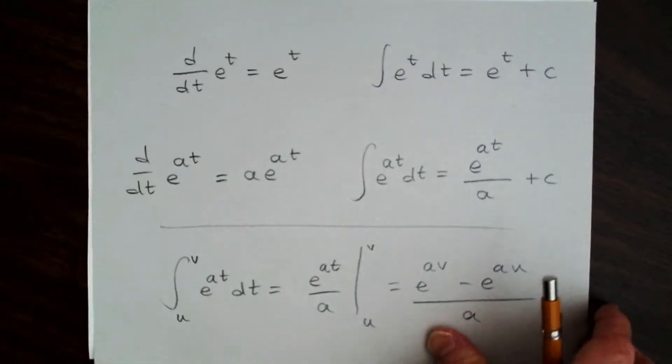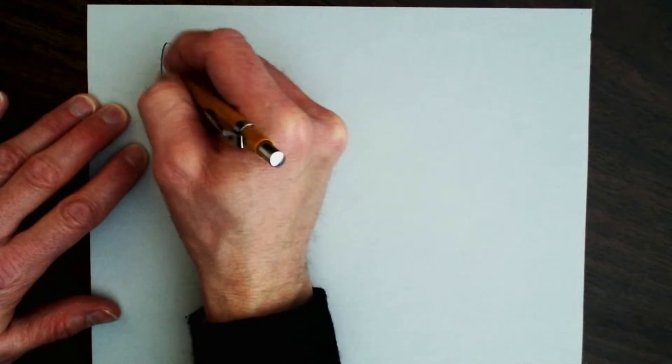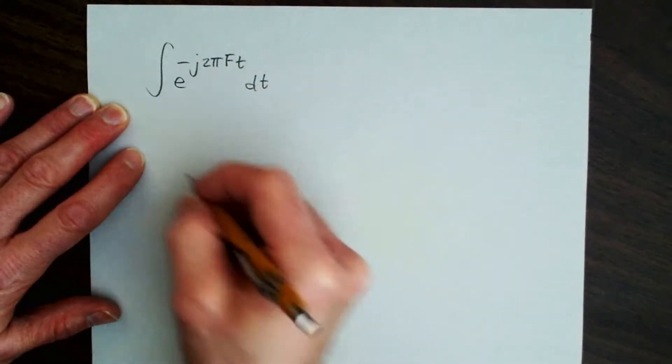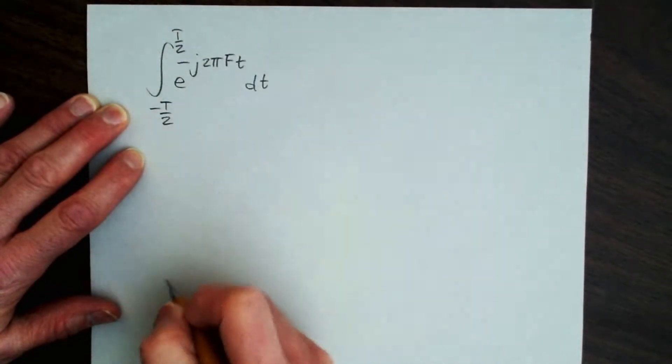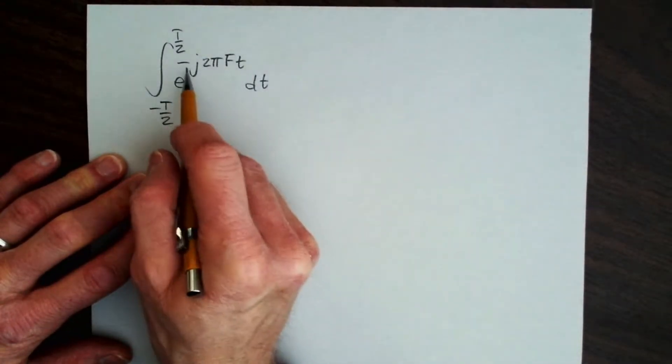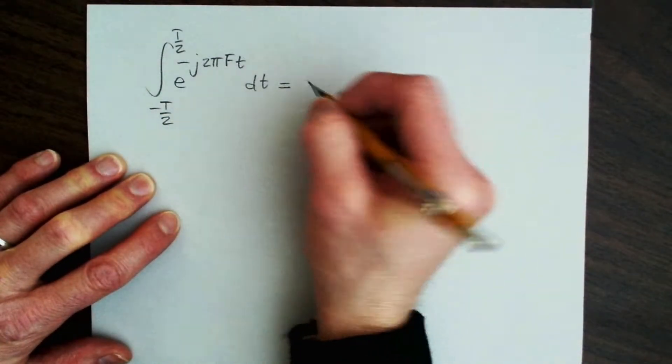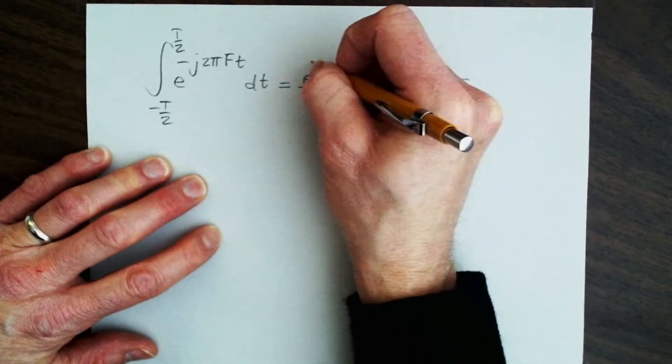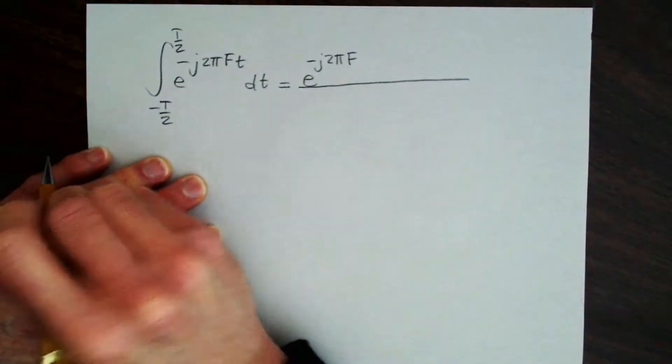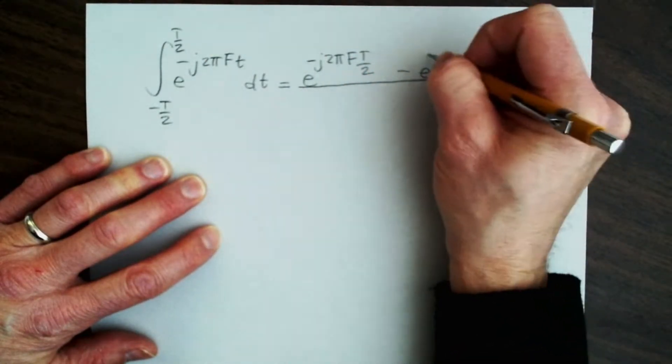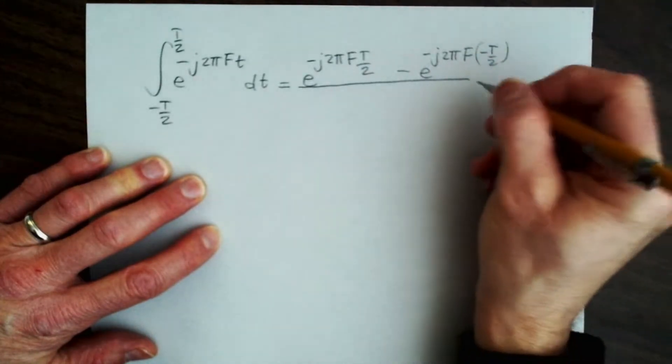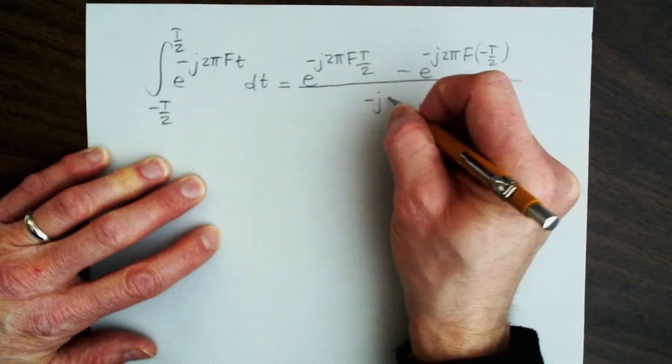Let's look at a particular instance of this integral. Let's integrate e to the minus j 2π f t dt from minus T over 2 to capital T over 2. So in this example, a now has taken the value negative j 2π f, but we should be able to just write down the answer to this integral, because it's going to be e to the a, which is minus j 2π f, times the upper limit, that's T over 2, minus e to the a, which is minus j 2π f, and then we have minus T over 2, divided by a, which is minus j 2π f.